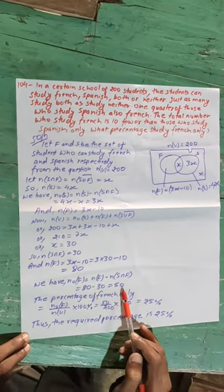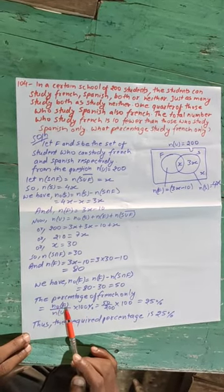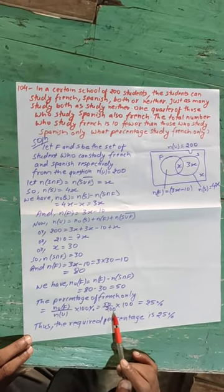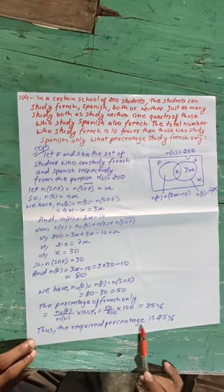The percentage of French only = n(F only)/n(U) × 100 = 50/200 × 100 = 25%. The required percentage is 25%.